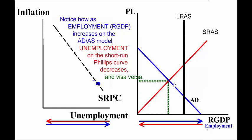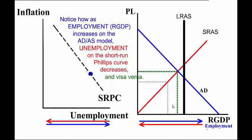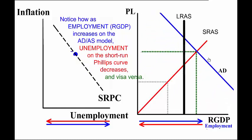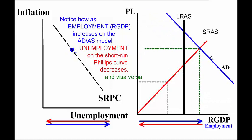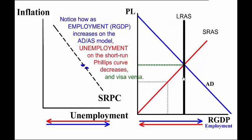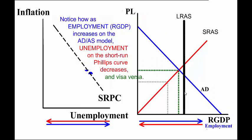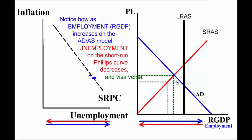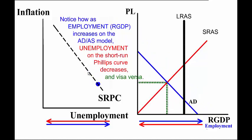Notice as employment increases on the AS-AD graph because real GDP is increasing, unemployment is going down on the Short Run Phillips Curve and inflation is going up. As aggregate demand decreases, employment is going down on the AS-AD graph, but unemployment is going up on the Phillips Curve — moving from this point here to this point here.